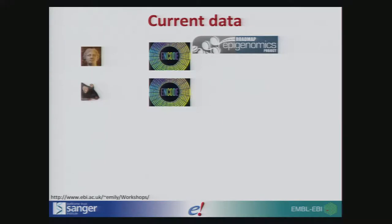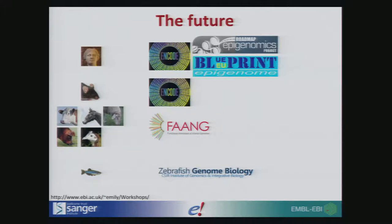At the moment, we have ENCODE data for human and for mouse, and also data from Roadmap Epigenomics that we produce this regulatory build with. But we have stuff coming up in future — for human we've got Blueprint coming in. We're getting involved at the early stages with the FANG project, which is a very similar project but with agricultural species, and also with the zebrafish ZENCODE. We're getting in at the early stages, making sure we're working with the data coordinators for these projects so we can pull in the data as soon as it comes out.